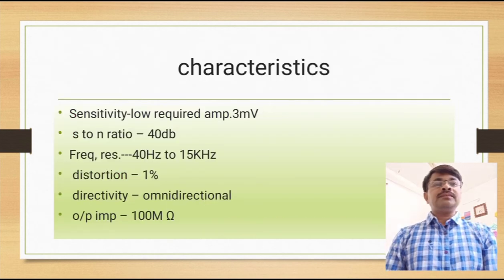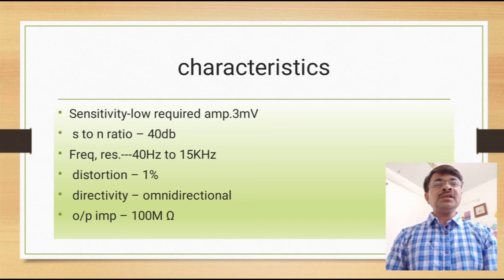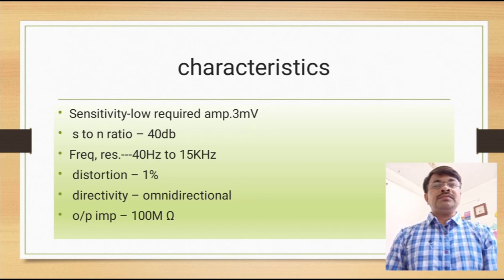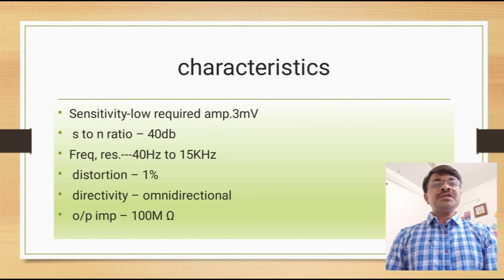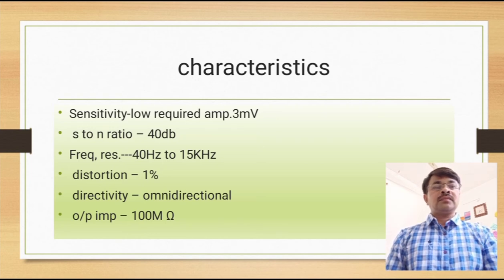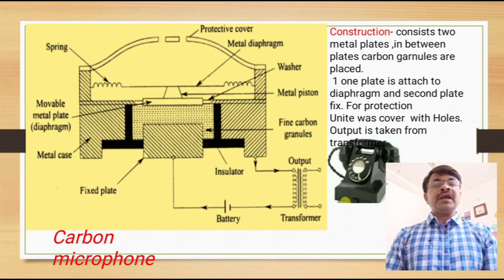Some important characteristics of the capacitor microphone: Sensitivity — output voltage is 3 millivolts, which is small, so we require an amplifier circuit. Signal-to-noise ratio is 40 dB, which is good. Frequency response is 40 Hz to 15 kHz — it is very good and flat. Distortion is 1%. Directivity is omnidirectional, meaning the microphone can pick up sound in 360 directions. Output impedance is 100 megaohms, which is high.